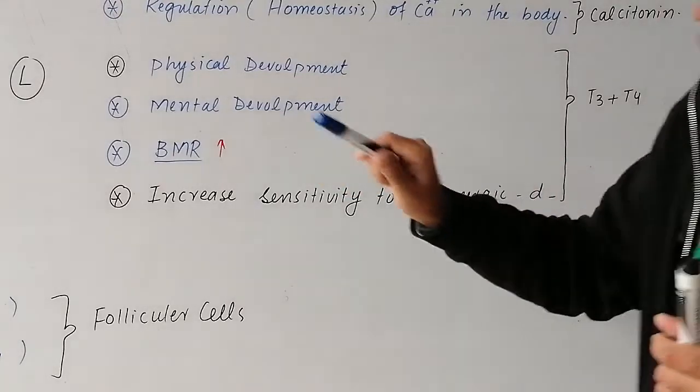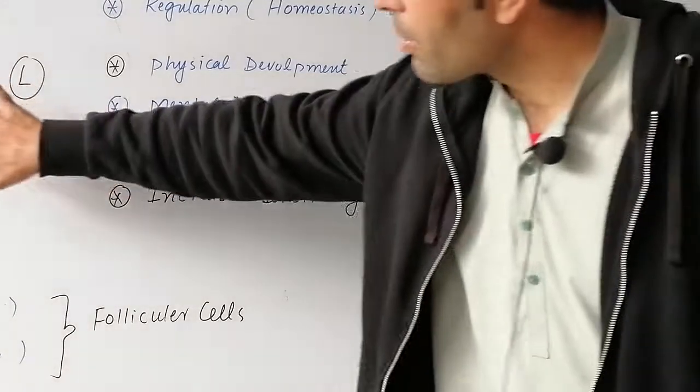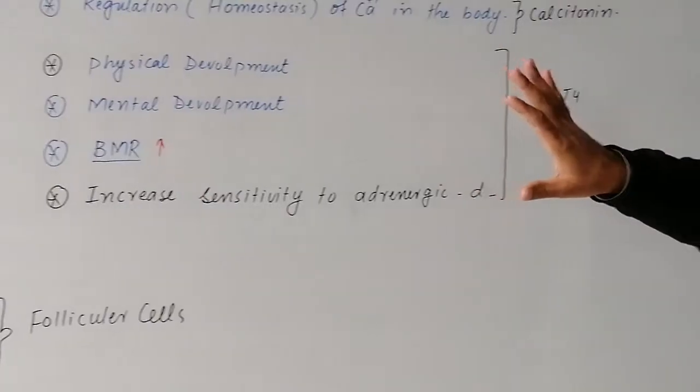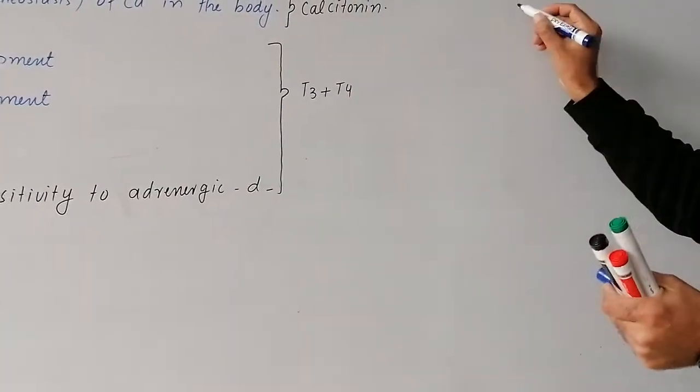BMR is controlled by T3 and T4. Calcitonin is separate from T3 and T4. So let me explain this at FSC level in detail.